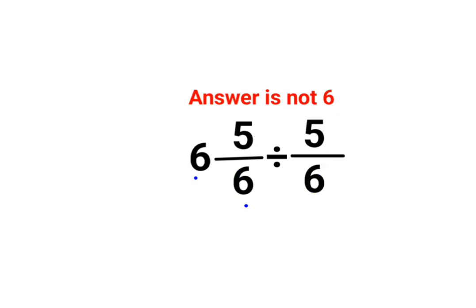The reason for that is, please understand, you cannot directly cancel the fractions if you have an integer over here. Basically, this entire fraction is actually a mixed fraction.